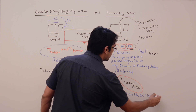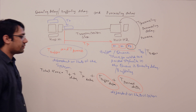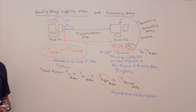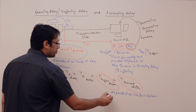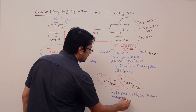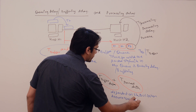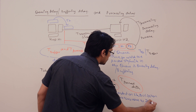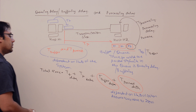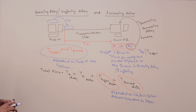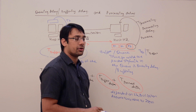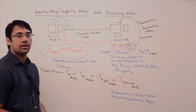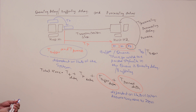Since buffering delay and processing delay depend on system state, you cannot predict them. If a question — for example in a GATE or EGISnet examination — provides the buffer delay and processing delay, then you can use those values. Otherwise, you can assume their values as zero.